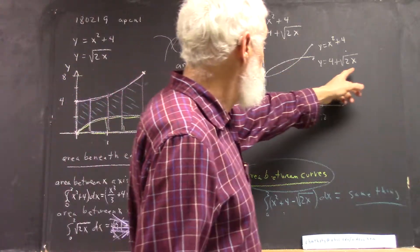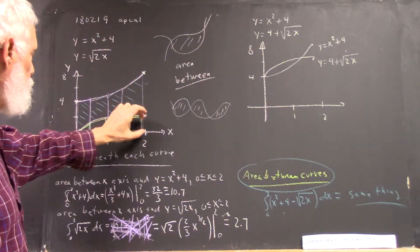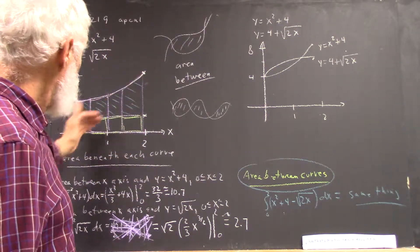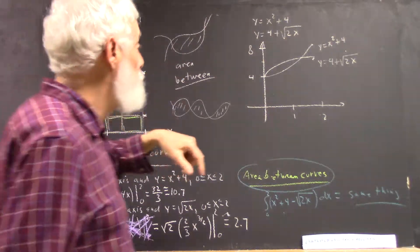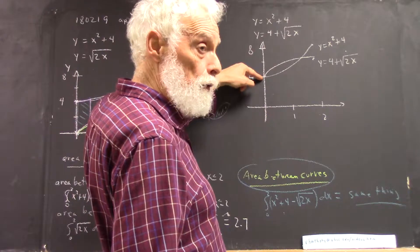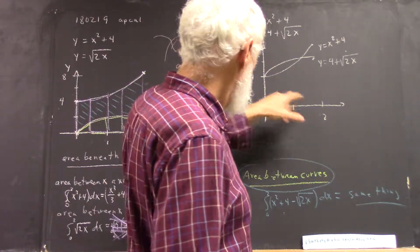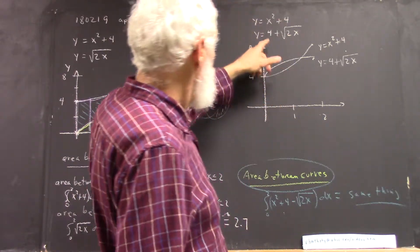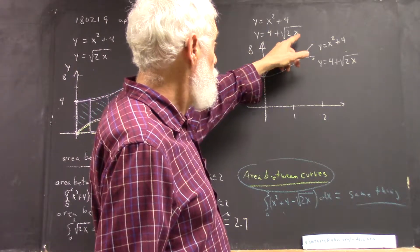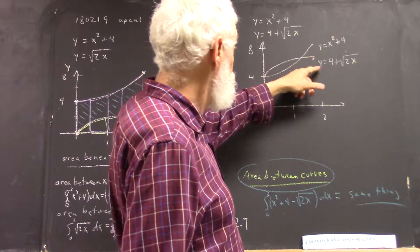And 4 plus the square root of 2x, well, we just raised every point of this graph 4 units. It's going to have the same basic shape, but it's going to start 4 units higher. So it's going to look like this, and it's going to go from value 4 when x is 0 to value 6 when x equals 2.